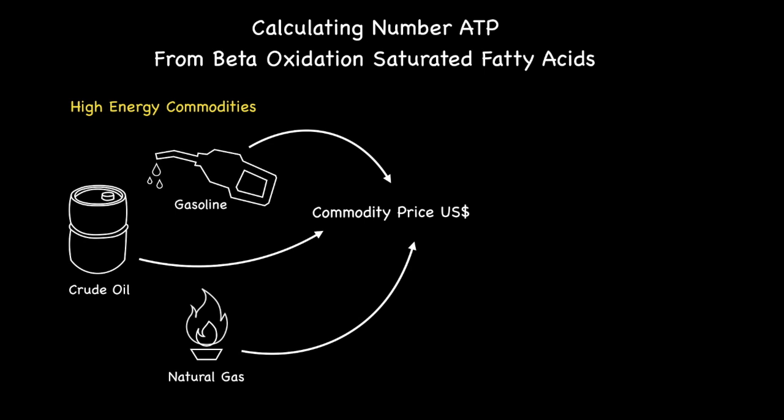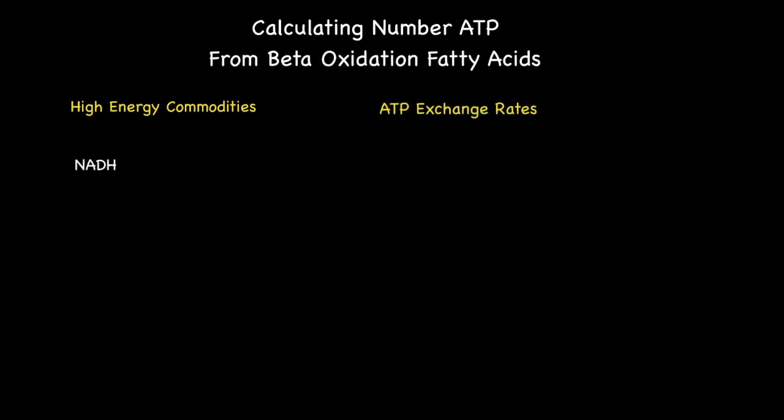So what are the body's high energy commodities and what are their exchange rates in terms of ATP currency? When it comes to energy metabolism we have three key players: NADH, FADH2, and a closely related cousin to adenosine triphosphate known as guanosine triphosphate, abbreviated to GTP.